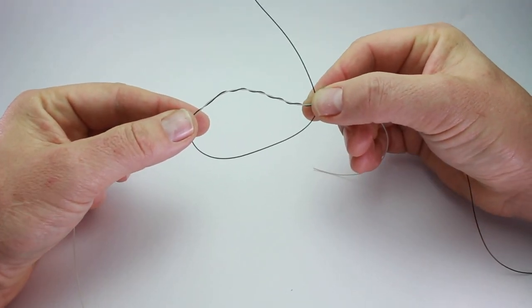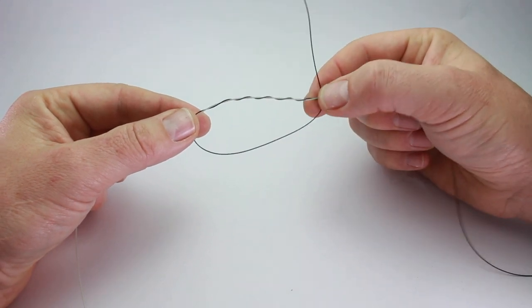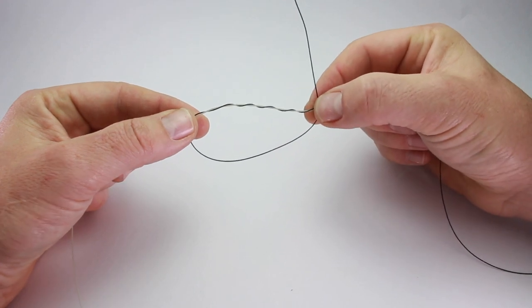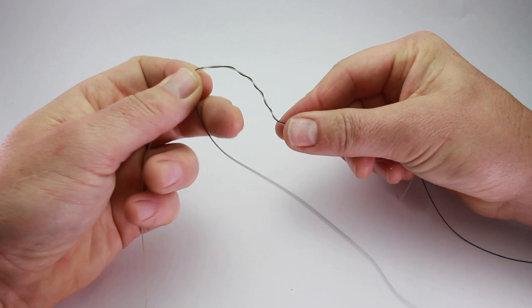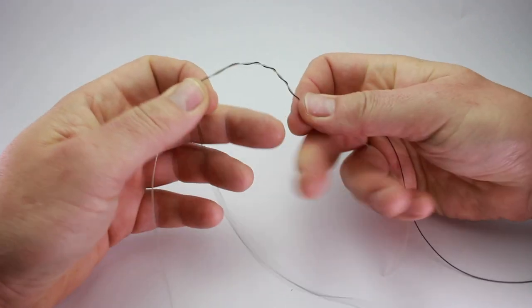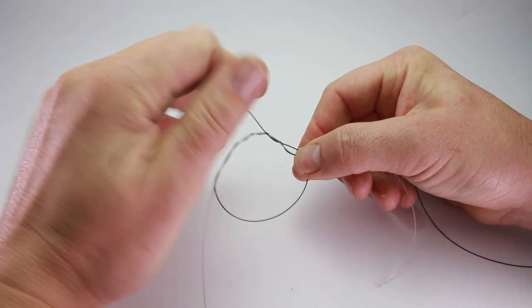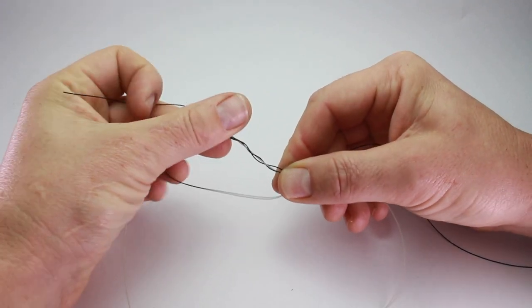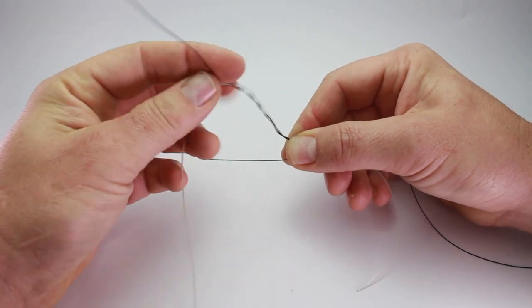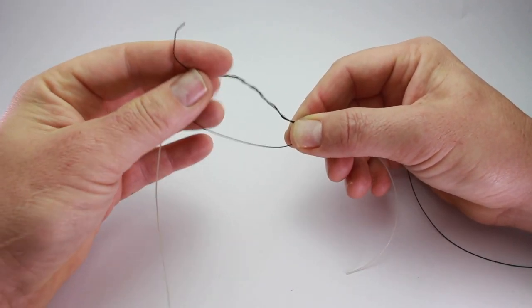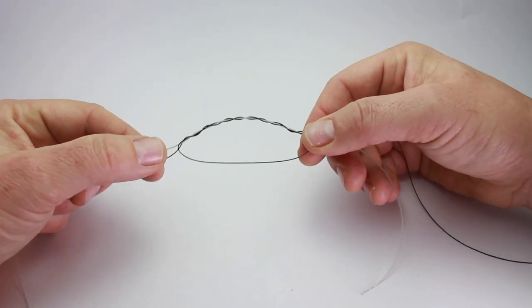I'm still pinching with my thumb and forefinger the tail end of the main line and the knot of the leader line. Working back the other way, I'm going to do the same amount: one, two, three, four, five, six—I go seven there—and then hold that tail there.